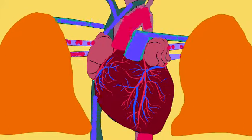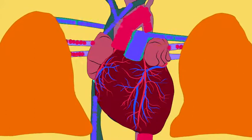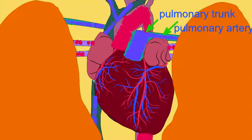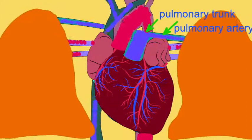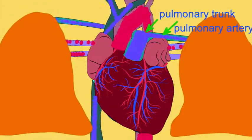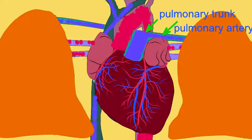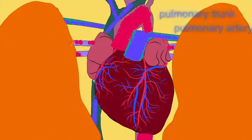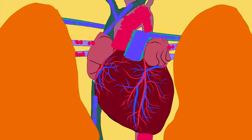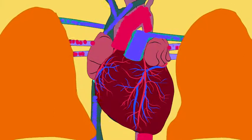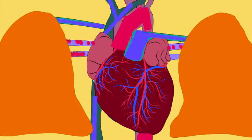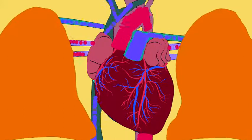It is then pumped out from the right ventricle, through the pulmonary trunk, through pulmonary arteries. Thus, blue deoxygenated blood is sent to the lungs. Here, gas exchange occurs, and blood is converted into oxygenated blood, which is a brighter red.